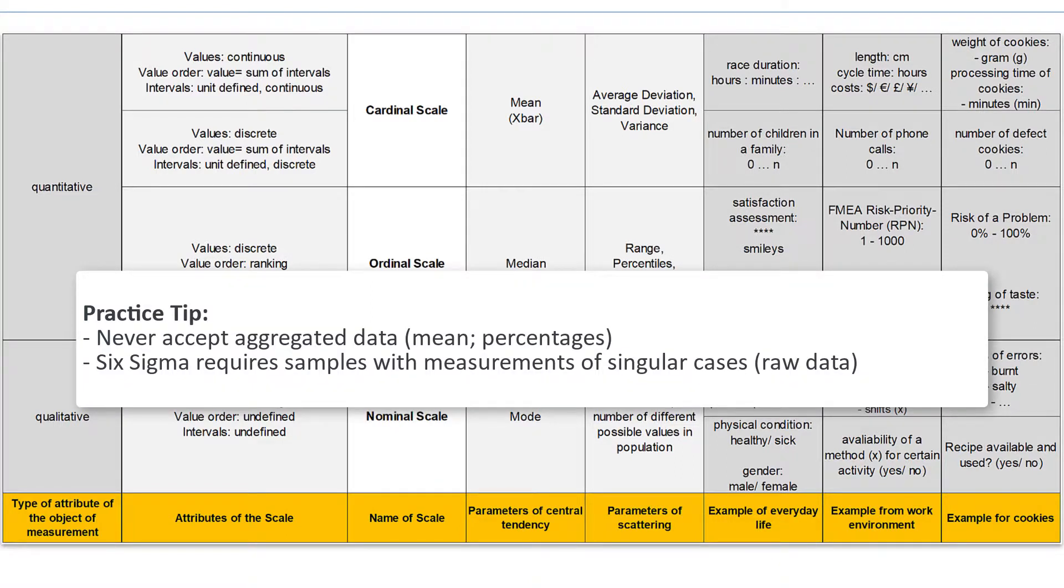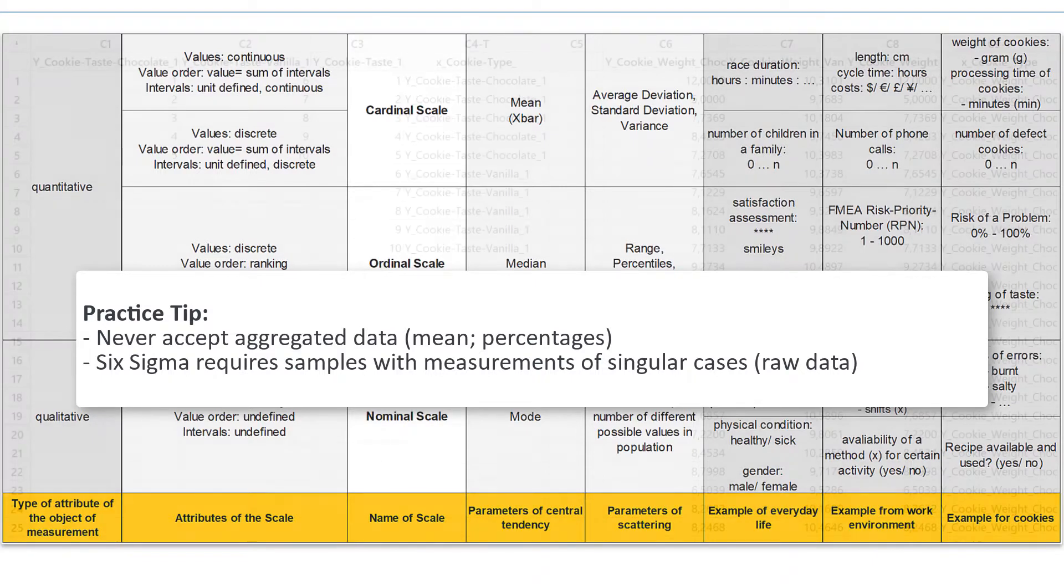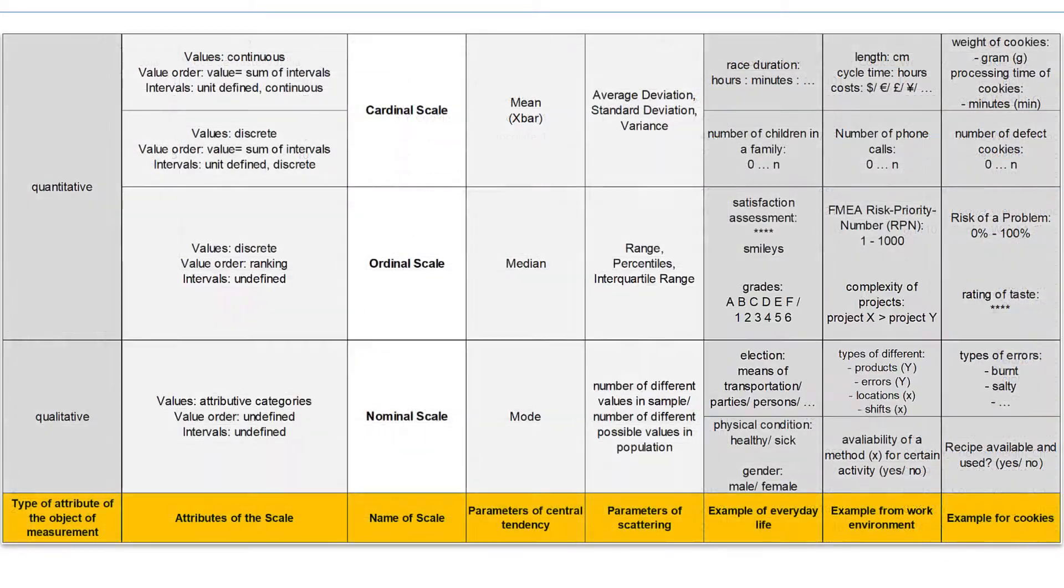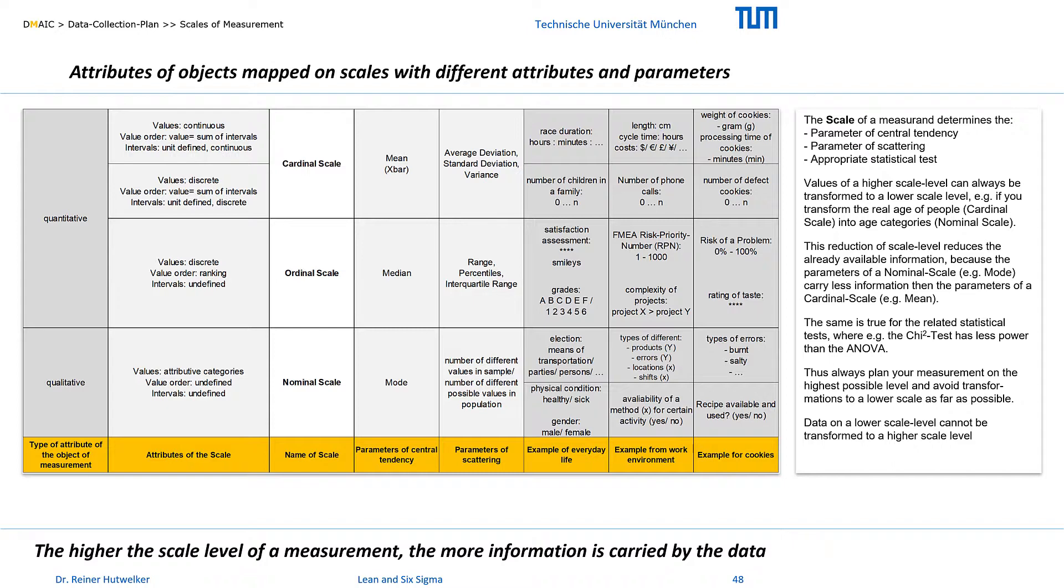In Six Sigma we also never accept aggregated data such as percentages or means that are already available in reports. Because for statistics we always need random samples with single raw data. With a desire to gain as much information as possible about our influences and problems with the measurement of X and Y we can now move on to the data collection plan of SigmaGuide.